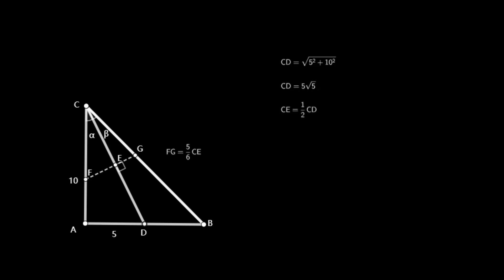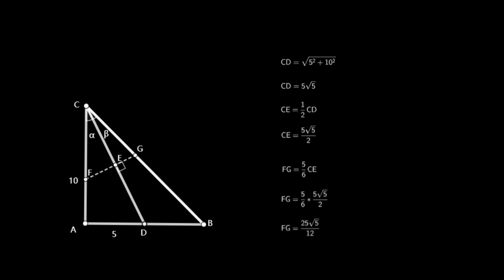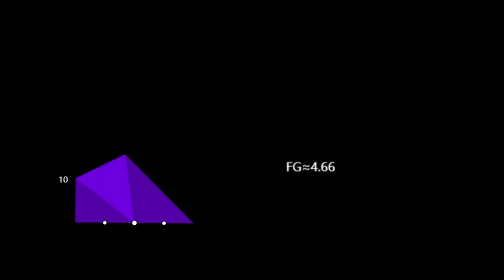Using the Pythagorean theorem, CD equals the square root of 5² plus 10², giving CD equal to 5 times the square root of 5. CE equals half of CD, which is 5 times the square root of 5 over 2. Then FG equals five sixths times CE, equal to 5/6 times 5√5/2, giving FG equal to 25 times the square root of 5 over 12, approximately 4.66. When point D is at the midpoint of the bottom, the crease is about 4.66.